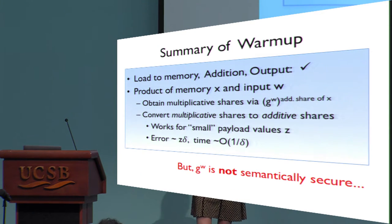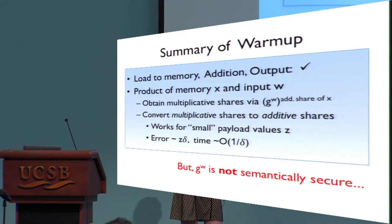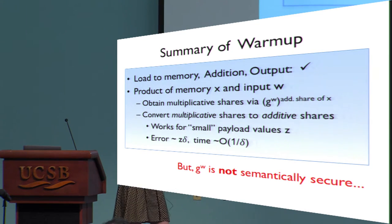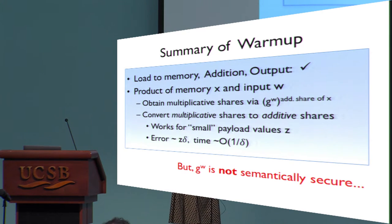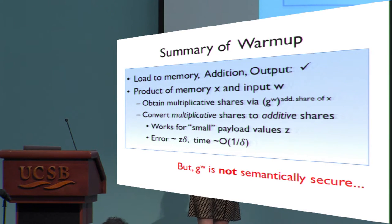Summarizing the warm-up construction: loading to memory, addition, and outputting values were not a problem. To multiply an input together with a memory value x, we first take G^w, raise it to the additive share of x, and then run the share conversion procedure. Note that the error of the share conversion scales with the size of the payload — this is where we get the restriction that correctness holds only as long as the plaintext remains small.